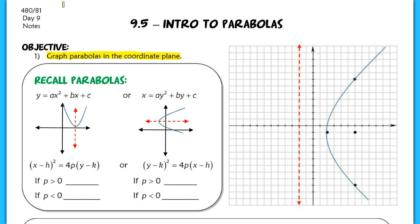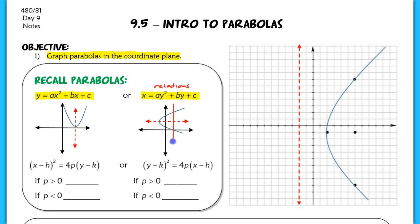We should already be really comfortable with graphing quadratic functions. Quadratic functions are of the form — in standard form — ax squared plus bx plus c. If you have x equals ay squared plus by plus c, those are called relations, because they're not actually functions — they don't pass the vertical line test. We should be really familiar with this because we've graphed in both standard form and in vertex form.